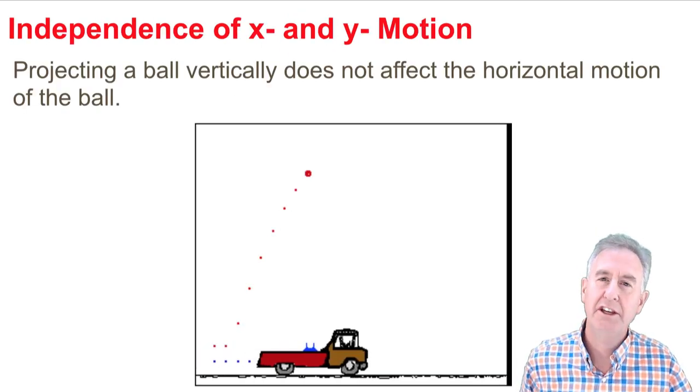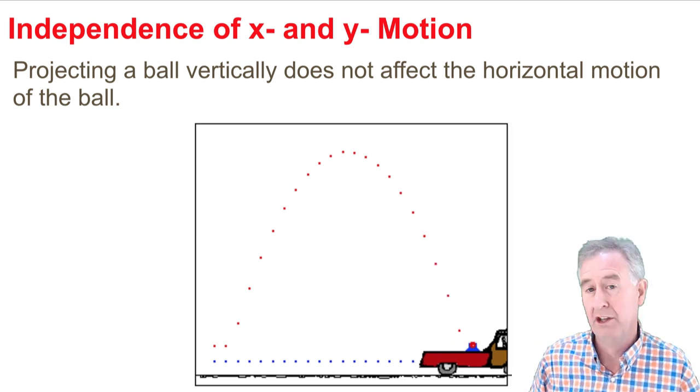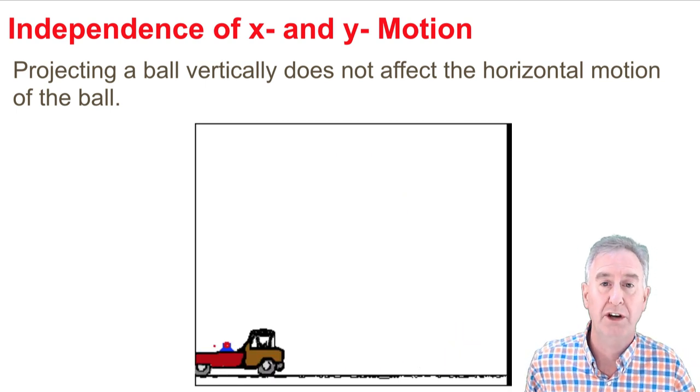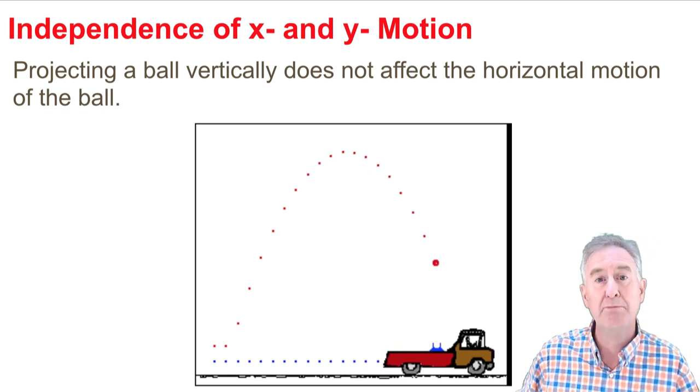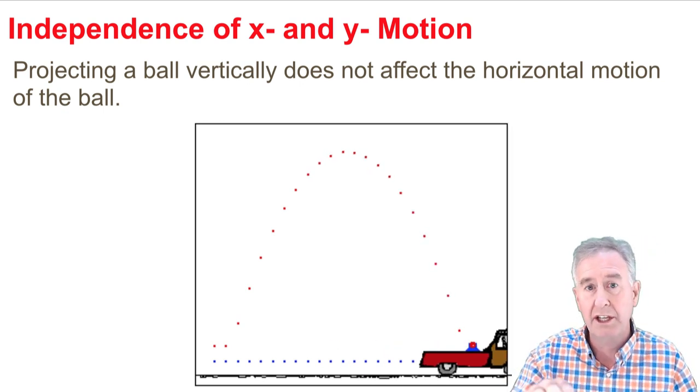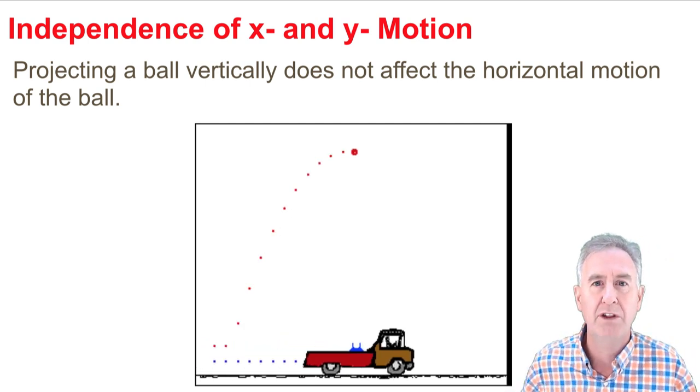To illustrate this idea of the independence of X and Y motion, let's consider this animation of a ball launched from a launcher in the back of a pickup truck. What we observe about this ball is that as it moves vertically and horizontally, its horizontal position at every moment in time is always above the launcher.